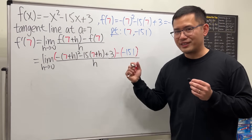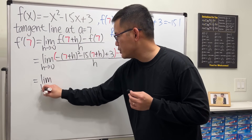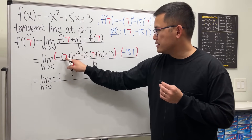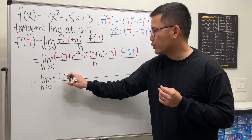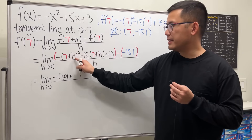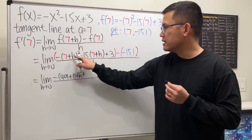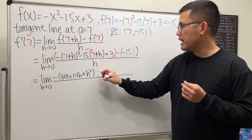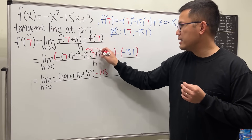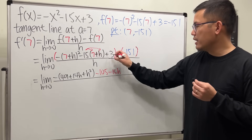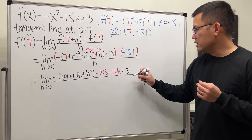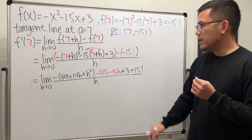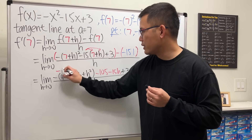Now we just have to work this out. We have the limit as h approaches 0. I'll open this up — the negative stays in front. For (7 + h) squared we get 49 plus 14h plus h squared. Distributing the negative 15 gives negative 105 minus 15h, then plus 3, and lastly minus negative 151, so plus 151. All divided by h.